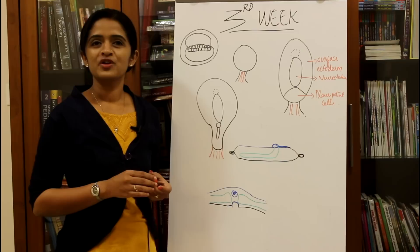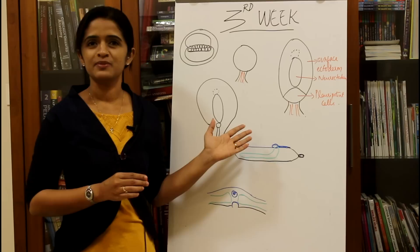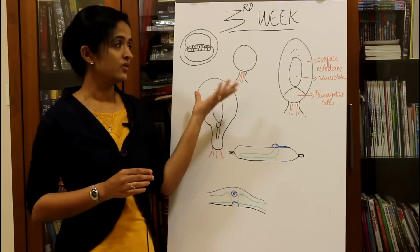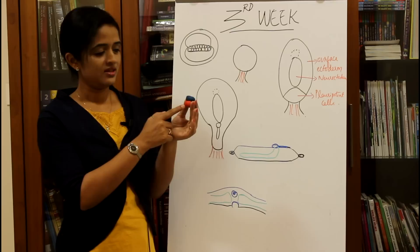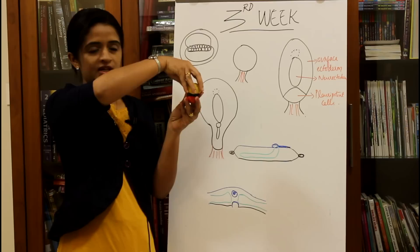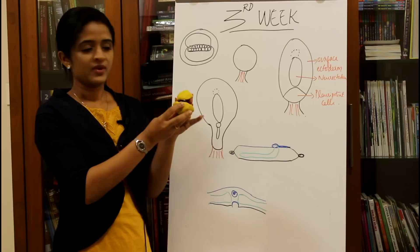Let's move on to the third week of development. Before going on to the third week, it's very important to know about the views of diagrams in embryology. Let's consider the blue colored region as the epiblast and the red colored region as the hypoblast, and we are making an amniotic cavity in the upper part and a yolk sac in the lower part.